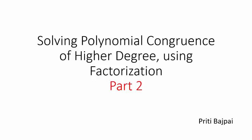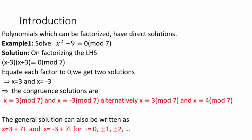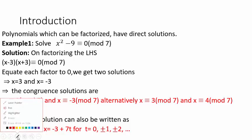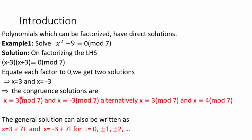Let us see how we solve such questions. If we are asked to solve x² - 9 ≡ 0 (mod 7), we look at the left-hand side. It can be easily factorized and we can write x² - 9 as (x - 3)(x + 3), so the congruence becomes (x - 3)(x + 3) ≡ 0 (mod 7).